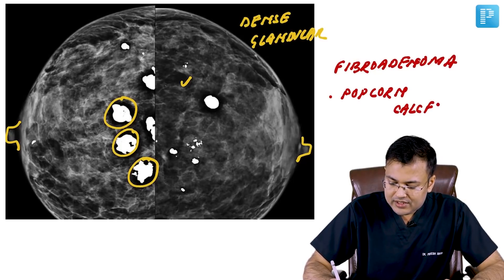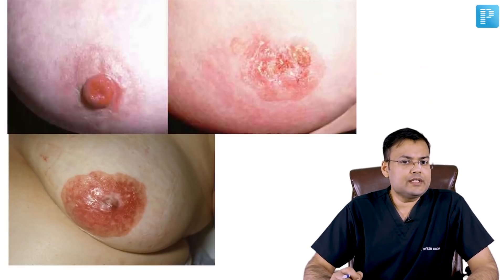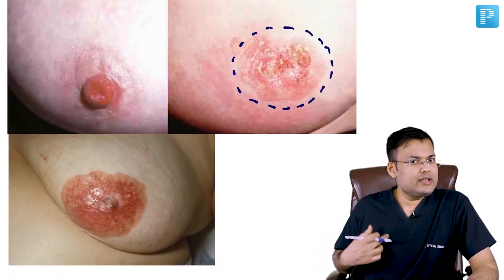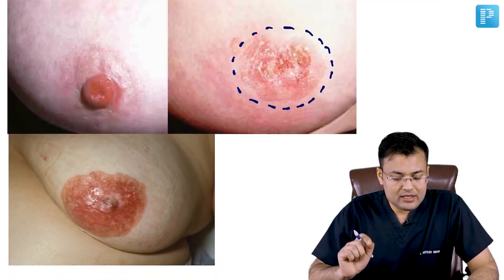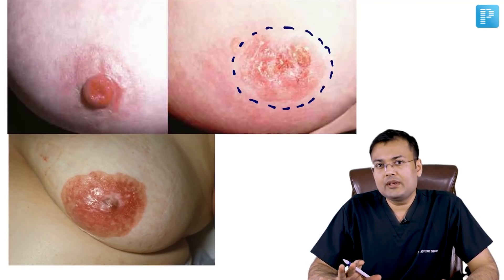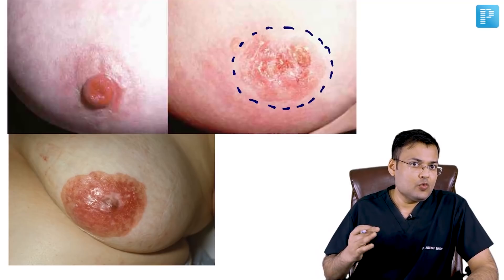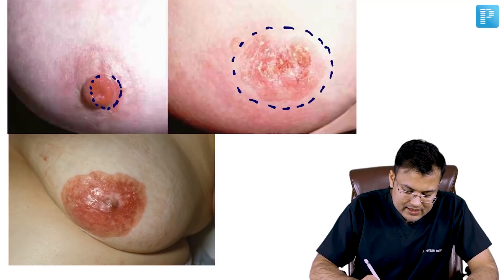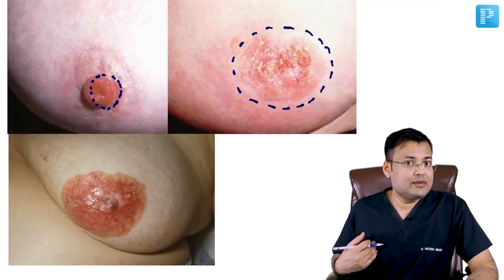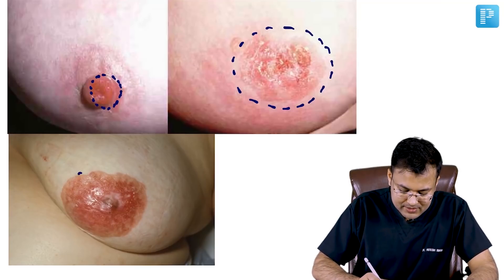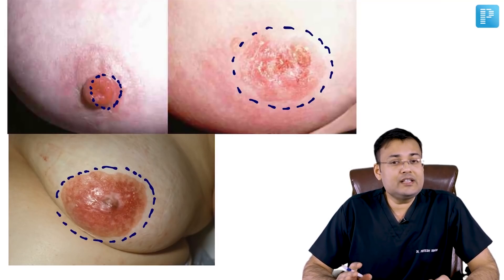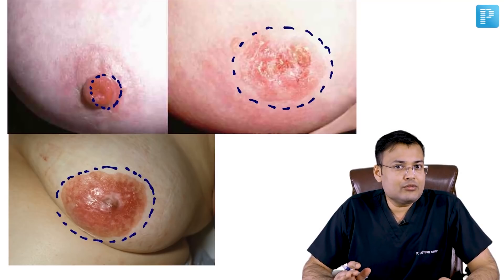Looking at these images, you can notice there is chronic eczematous eruption and simultaneously there is total destruction of the nipple. The eczematous eruption has started from the nipple in one image, and in another it has spread more extensively. This chronic eczematous eruption is seen in a condition known as Paget's disease of the nipple.